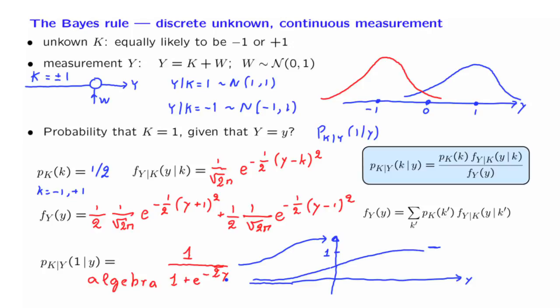If Y is equal to 0, then this term is 1, and we obtain a 1 half. Let us interpret this plot.